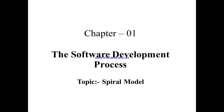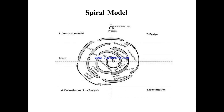We start our last type of model from the prescriptive process model in the chapter software development process — that is the spiral model. The four phases are: first, identification; second, design; third, construct or build; and fourth, evaluation and risk analysis.